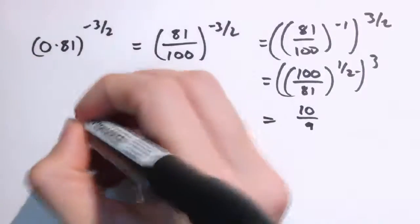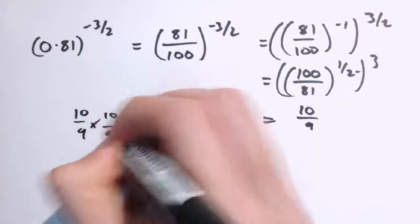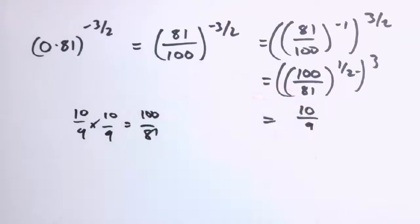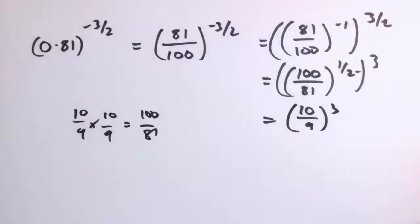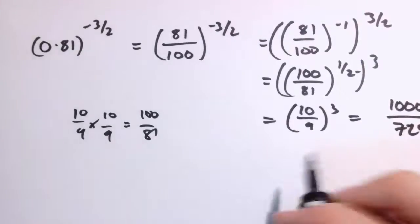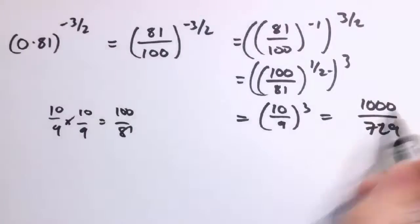If you multiplied 10 over 9 by 10 over 9 you can see you get 100 over 81, and then we cube that to get 1000 over 729, just doing 10 cubed, which is 1000, divided by 9 cubed, which is 729.